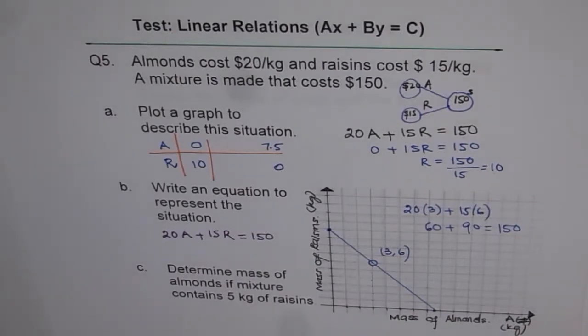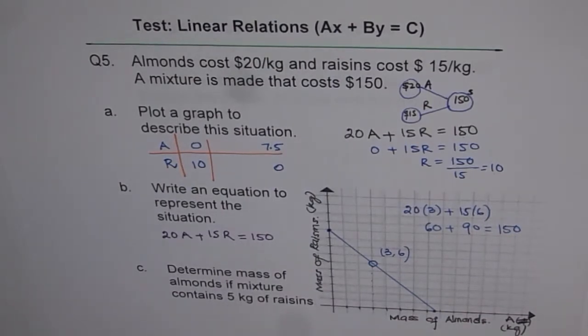Now part C of the question is determine mass of almonds if mixture contains 5 kg of raisins. Now to answer this question, we can do it both graphically or algebraically. Let's try it graphically.